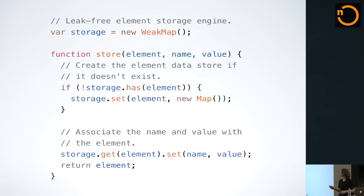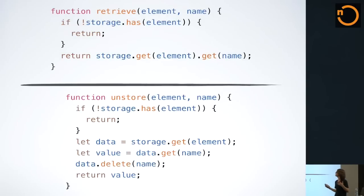So let's write a leak-free element storage engine using weak maps. jQuery actually has a clear migration path for this. This is an implementation of the store function that will allow us to give it an element, some key, which can be any object—remember now that we have real maps—and a value to associate with it. We then make sure that the element is in our storage map, and then simply set its name and value appropriately.